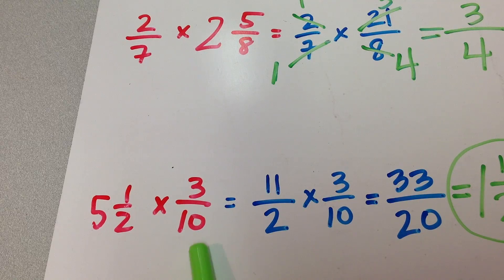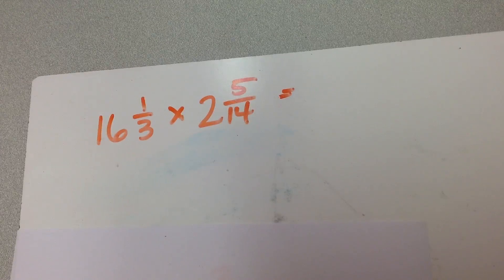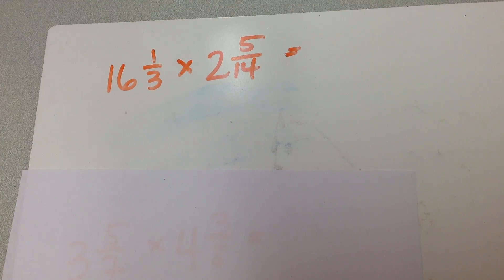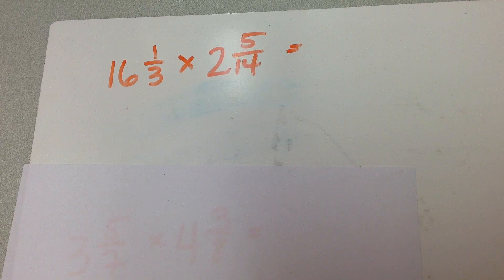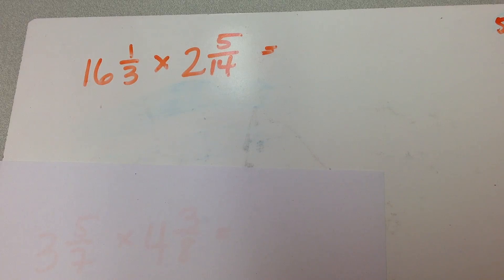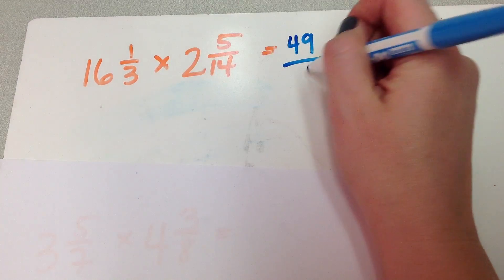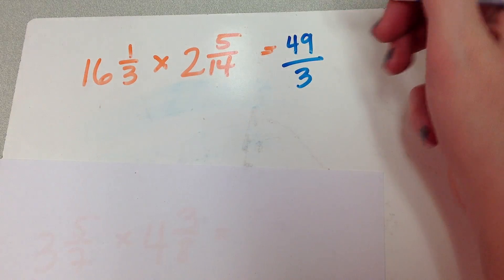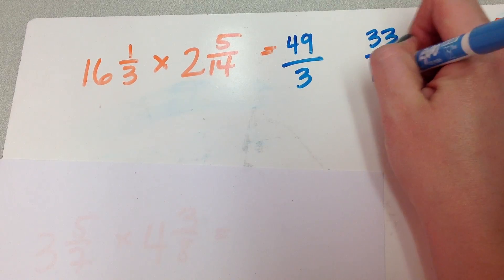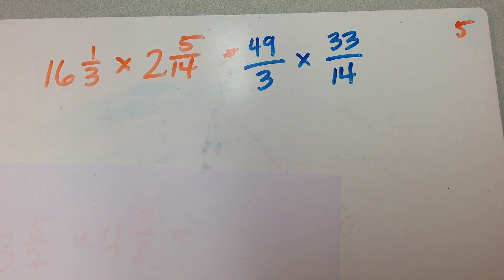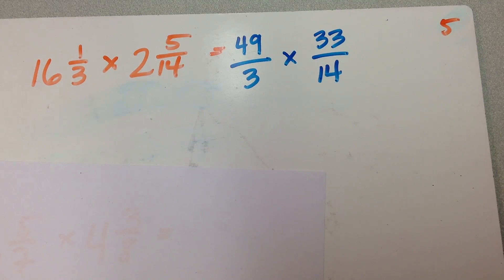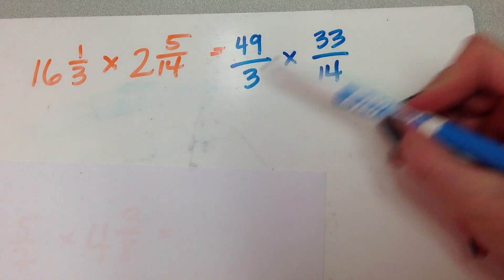In this one we always still had at least one number that was a fraction and not a mixed number. What happens if we have two mixed numbers multiplying together? Well, we have to do twice the work, sadly — but we can totally do that. So here in this problem, I have 16 and 1 third times 2 and 5 fourteenths. I can't deal with either of them in this form — I have to convert them both to improper fractions. So: 16 times 3 is 48, plus 1 is 49 — bottom number stays the same. 2 times 14 is 28, plus 5 is 33 — bottom number stays the same.